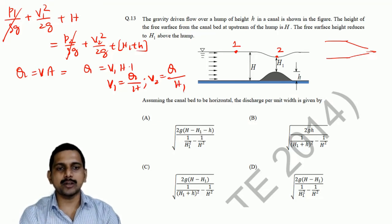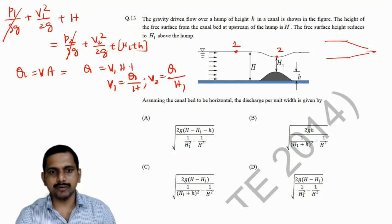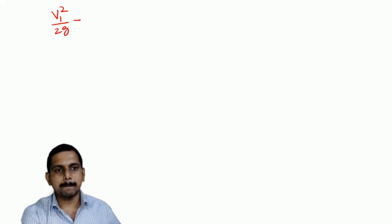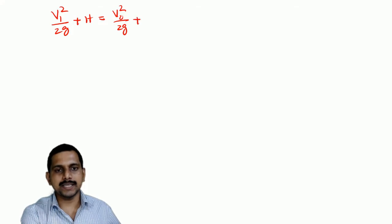So, we will substitute that over here. So, in the Bernoulli's equation, what we have got, we will substitute this. What remains is, V1 square by 2g plus h is equal to V2 square by 2g plus h plus small h.